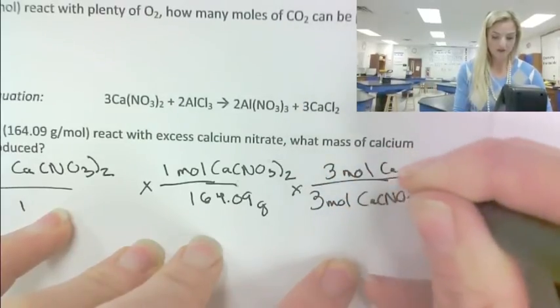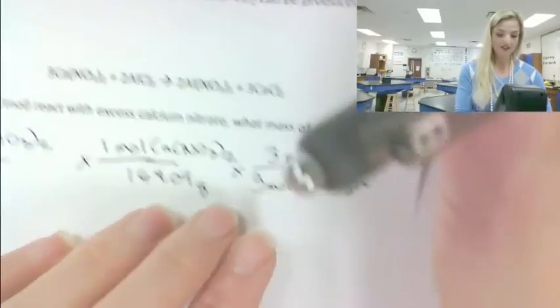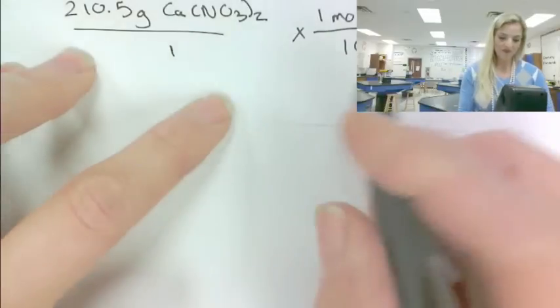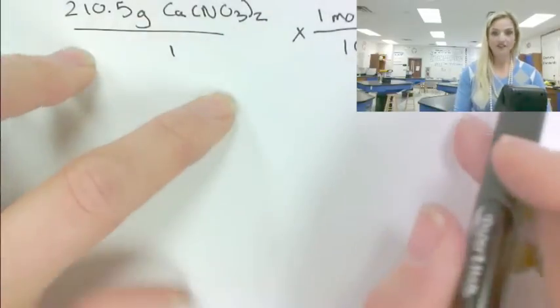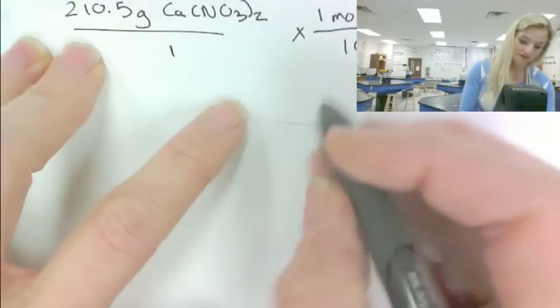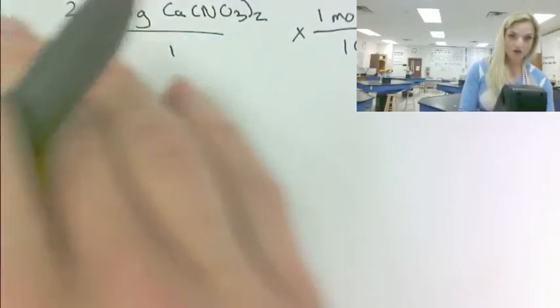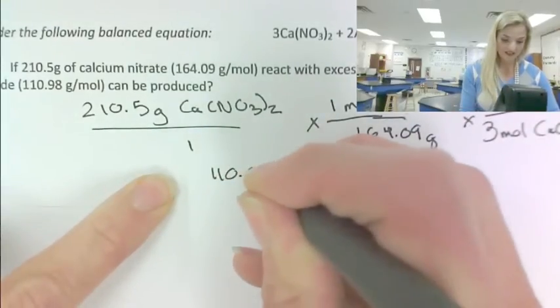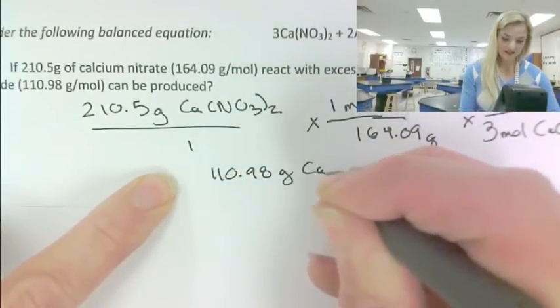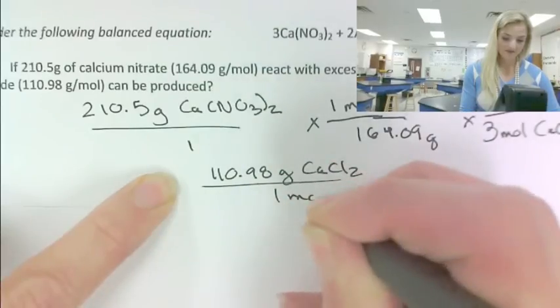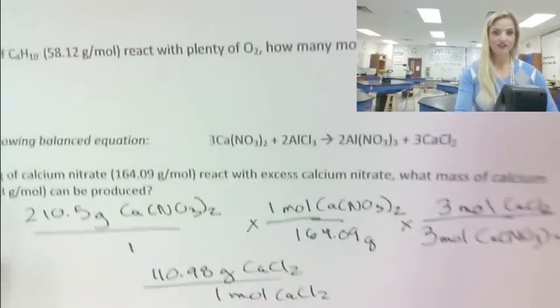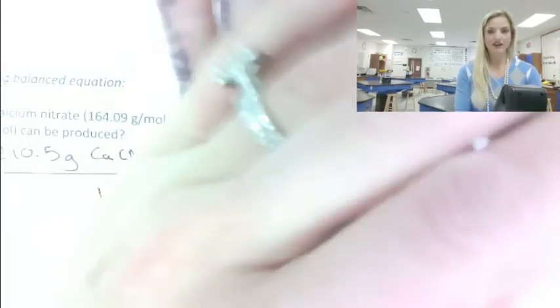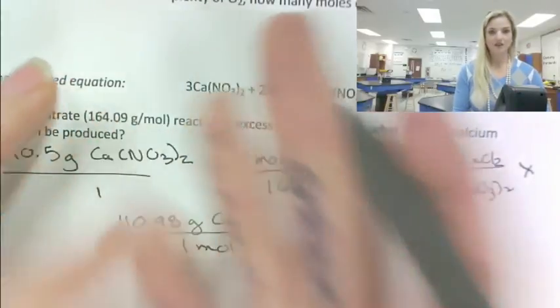And then the final step, and I ran out of room, I'm sure that happens to you sometimes too, we need to go from moles of calcium chloride to grams. And so I know I need grams on top, and the molar mass that's given to me here is 110.98 is one mole. And so there's the whole setup. We start on the middle finger, go to the palm, put our hands together, and we go to the next middle finger.